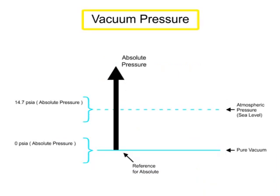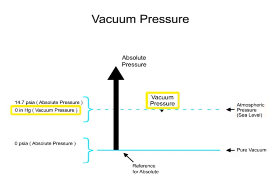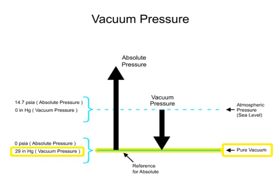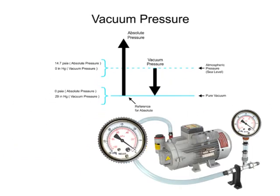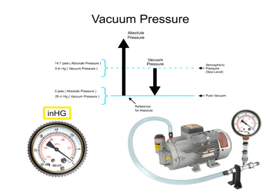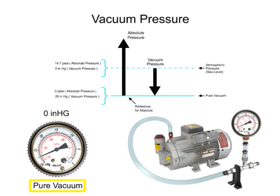For vacuum pressure, the scale begins at atmospheric pressure at sea level as the reference and ends at complete absence of pressure, or pure vacuum. The unit of measurement for vacuum is inches of mercury. At sea level, the measurement scale indicates 0 inches of mercury, and at pure vacuum, the measurement scale indicates 29.92 inches of mercury.